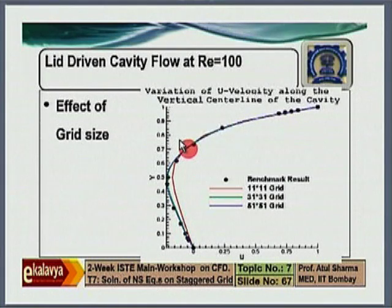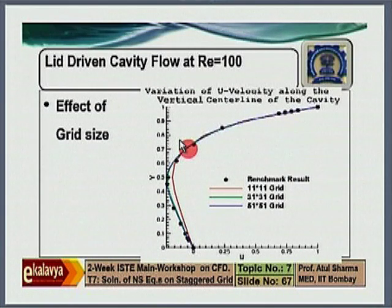This way you can convince people that your code gives accurate results, and if using a software, that you are using it correctly. You also have to show domain size independence — if your far-field boundary is too small, the effect of boundary conditions from the far field will distort results near the solid boundary. If it is a transient problem, time step independence study is also needed. These are all things we do — grid independence, code validation, domain independence, and time step independence — to convince people that the results obtained are accurate enough.